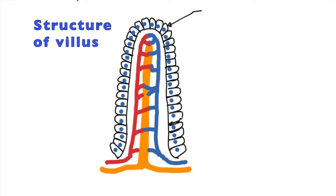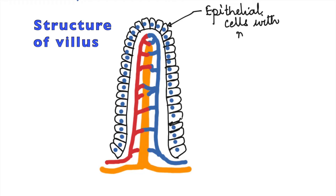The outer layer consists of epithelial cells, which show the presence of microvilli as seen previously. This is a single layer of epithelium that facilitates easy diffusion of substances.